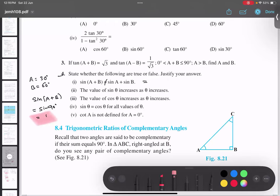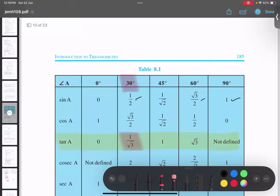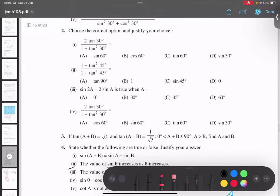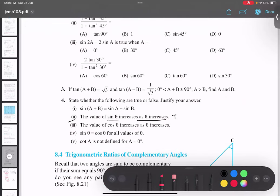So B part, let us read the B part now. B part is: the value of sin theta increases as theta increases. True. So yeah, that is true. Theta value is increasing 0 to 90, and sin theta value is also increasing from 0 to 1. So B part, answer over here is true. Answer over here is true. This is true, this is false.